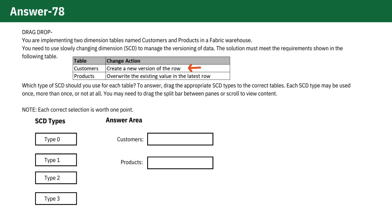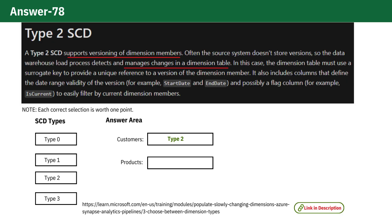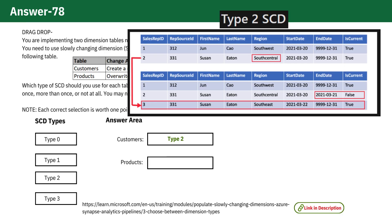For customers, the action is to create a new version of the row. This refers to SCD Type 2. In SCD Type 2, a new record is created whenever there is a change in the source data. The previous record is preserved, allowing you to track historical changes.